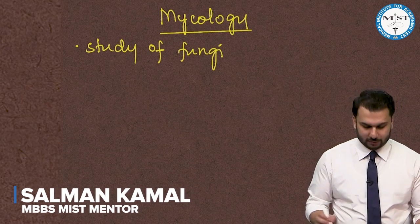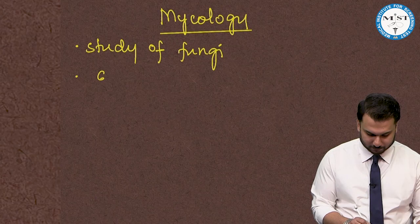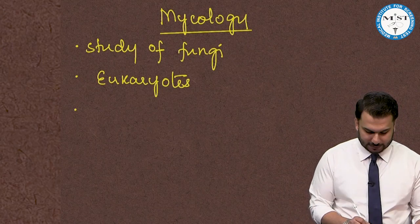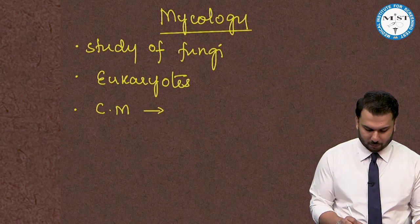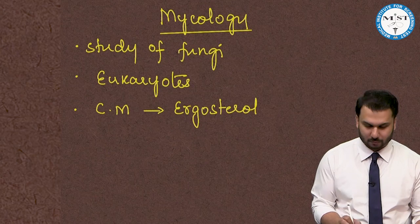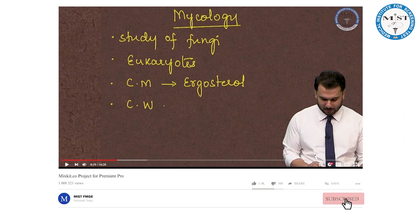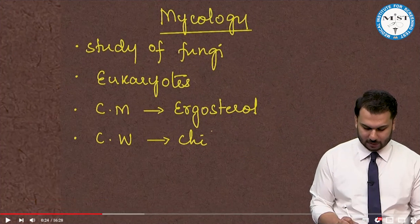We should know that the fungi are eukaryotic organisms. The cell membrane of fungi is made up of ergosterol, and the cell wall of the fungi is made up of a substance called chitin.